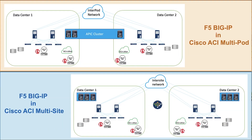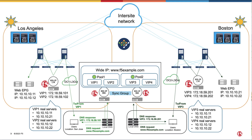Cisco ACI multi-site and multi-pod solutions can interconnect multiple Cisco ACI fabrics that can be geographically apart. In combining F5 Big-IP DNS and LTM solutions, we can best utilize the network infrastructure to improve application performance and provide application resiliency across data centers. We can enhance the user application experience by delivering application services efficiently to users based on their geographical locations.